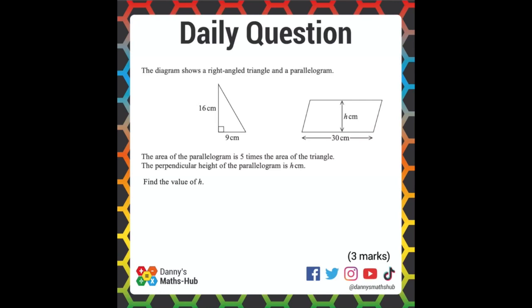So the first thing we need to do is work out the area of the triangle. So we need to do 16 times 9 divided by 2, because the area of the triangle is base times height divided by 2. This gives us 72 centimeters squared.